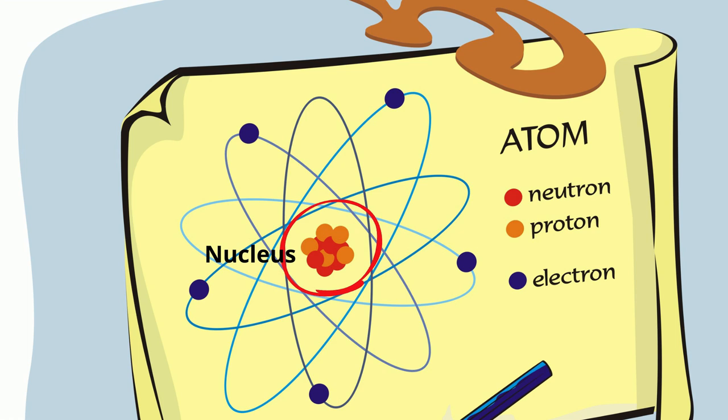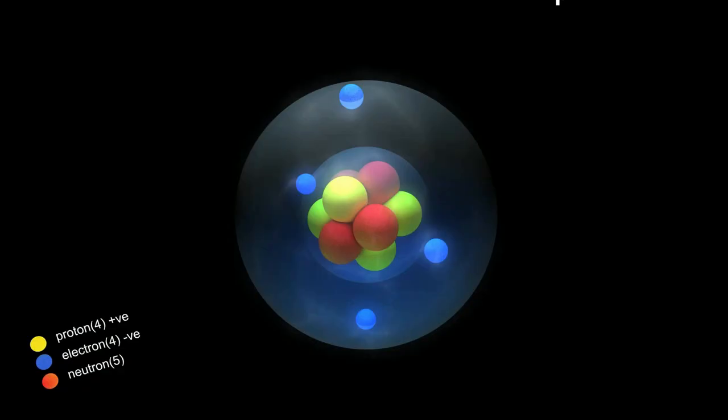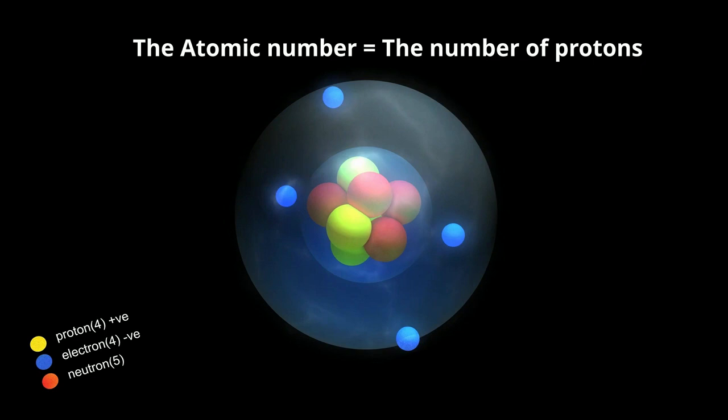The positively charged particles in the nucleus of an atom are called protons. The number of protons in the nucleus is the defining property of an element and it is referred to as the atomic number. Since each element has a unique number of protons, each element has its own unique atomic number.